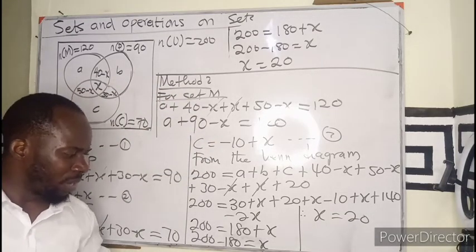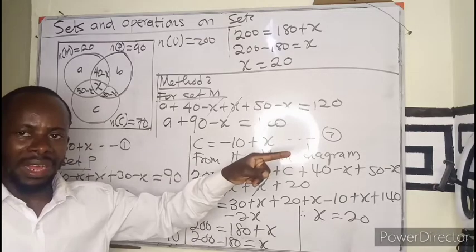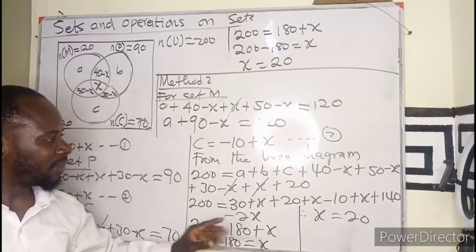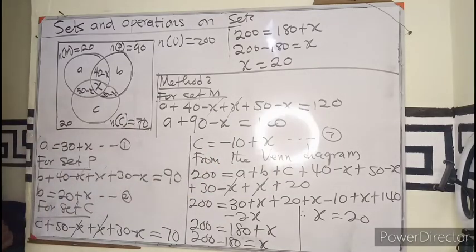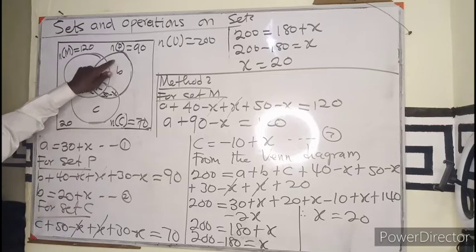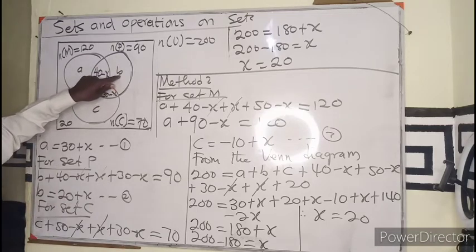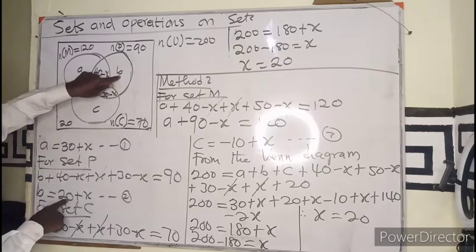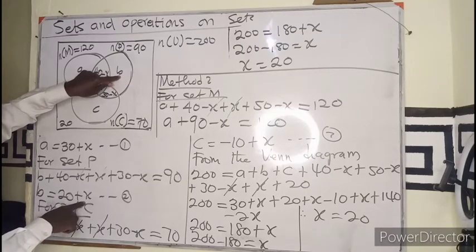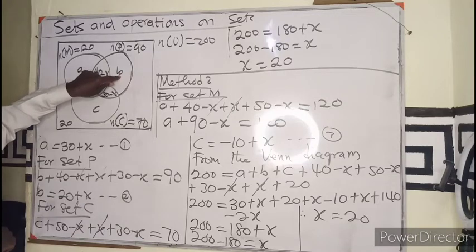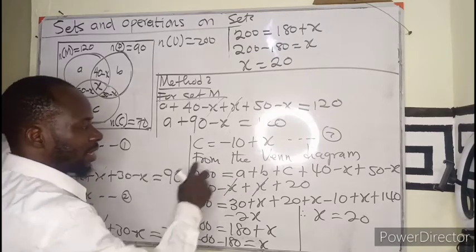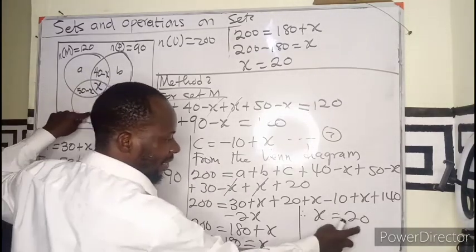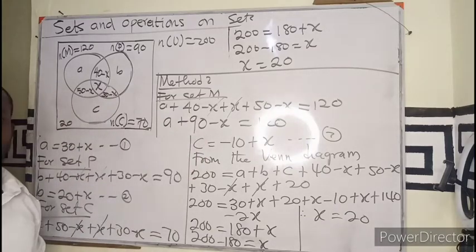With X equals 20, we can now find P only, which is B equals 20 plus X equals 40. Chemistry only is C equals minus 10 plus X equals minus 10 plus 20 equals positive 10. That is method 2 completed.